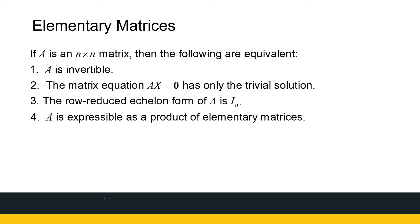The first one is an equivalence theorem, which is quite a powerful theorem. It tells me if I've got an n by n matrix, all the following statements are equivalent, meaning if one of them is true, the rest are true; if one is false, the rest is false. My matrix A is invertible if and only if the matrix equation Ax = 0 has only the trivial solution, and that happens if and only if the row-reduced echelon form of A is the identity matrix, and that happens if and only if A is expressible as a product of elementary matrices.